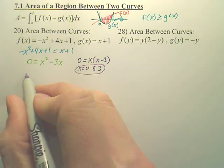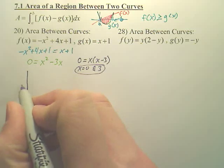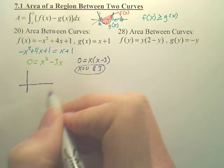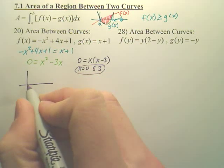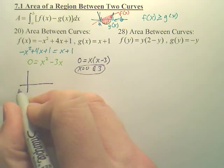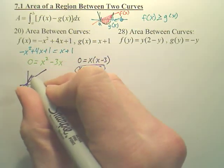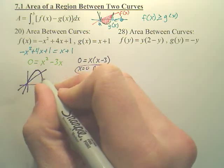If we made a sketch of this graph real quick, it just helps to make a quick sketch. What's going to happen? At 0 and at 3, these two graphs hit. You're going to have a graph like this, and it's going to hit at 0, and it's also going to hit at 3.